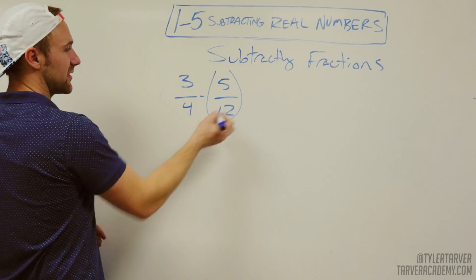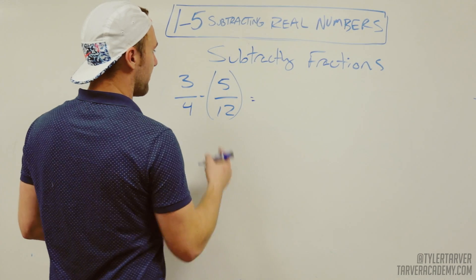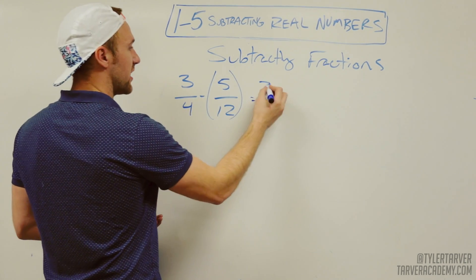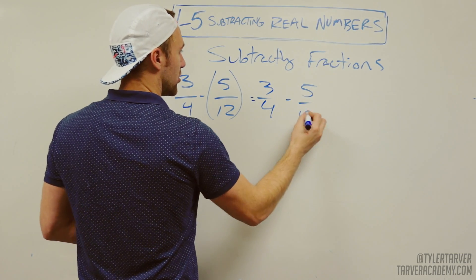We've got 3 over 4 minus 5 over 12. First off, I can drop that parentheses—I don't need it, there's nothing inside there that changes it. So that says 3 over 4 minus 5 over 12.